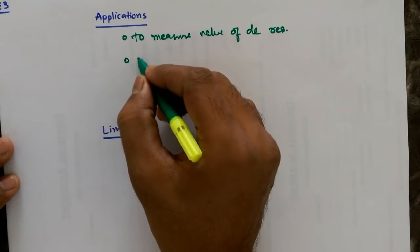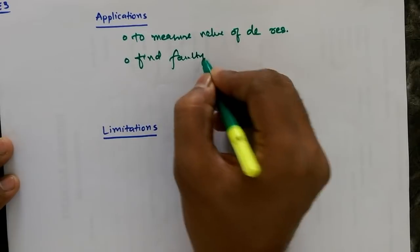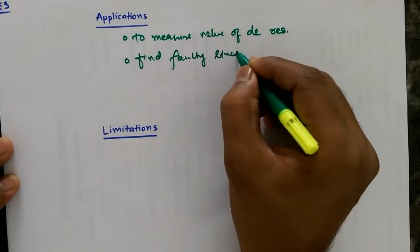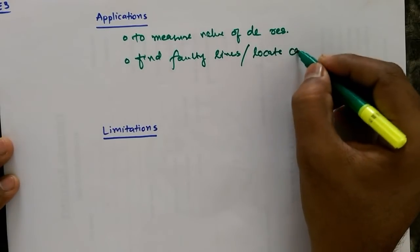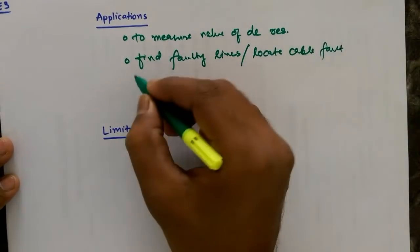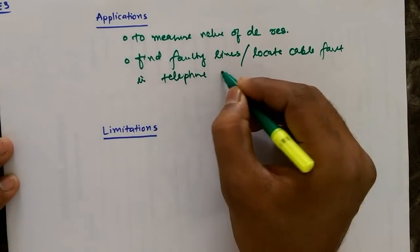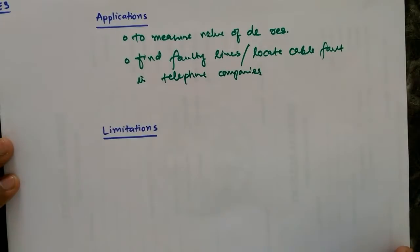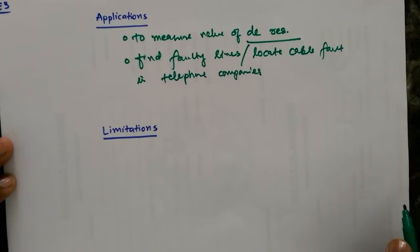Now another application in industries is to find the faulty part, the faulty connection or faulty line, or to locate the fault in the cable, to locate the fault in the cable in telephone companies. So these are the couple of applications of Wheatstone bridges in industries. We'll discuss this couple of applications.